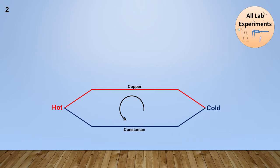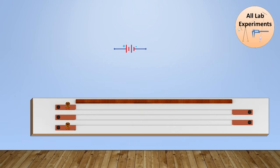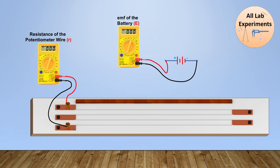So now we will use this potentiometer and calculate the EMF generated by this thermocouple. But at the beginning of this experiment, we will take potentiometer and our battery. First we will calculate the resistance of this potentiometer wire and the EMF of the battery. Now let us start our experiment.